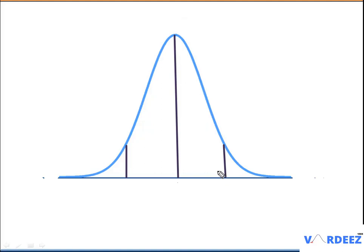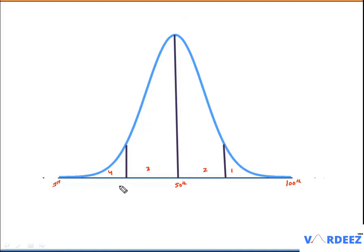They have divided this distribution in quartiles. Quartile means to divide the entire distribution into four equal parts. So this is the first quarter, this is the second quarter, this is the third quarter, and this is the fourth quarter. They have also given the results in percentiles — this is the first percentile and this is the hundredth percentile. So this is the entire distribution. Over here we have the 50th percentile in the middle. This is the median, this is the 25th percentile, and this is the 75th percentile.